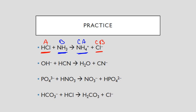As you can see, we have an acid and a base as the reactants, and a conjugate acid and a conjugate base as the products. In our second example, we have OH⁻ as one of our reactants. We go find its partner among the products: H₂O and the cyanide ion.